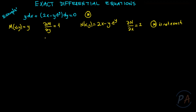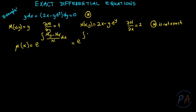I assume the integrating factor μ is a function of only x, given by the exponential of the integral of (M_y minus N_x) over N dx. That gives the exponential of the integral of (1 minus 2) over (2x minus y·e^y) dy, which is not straightforward.